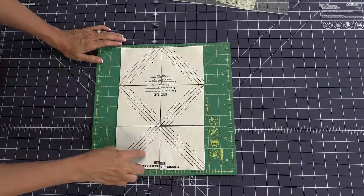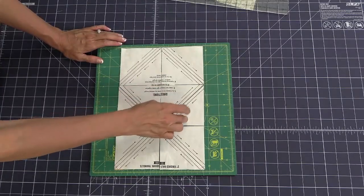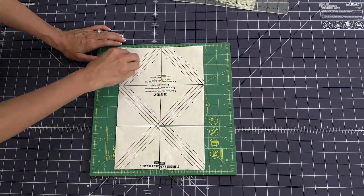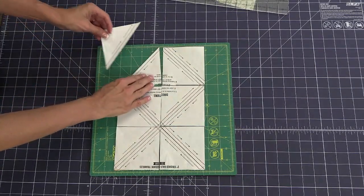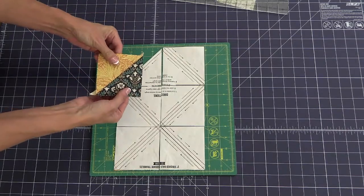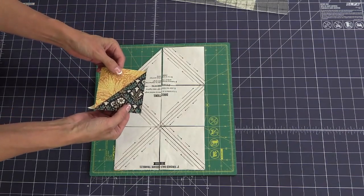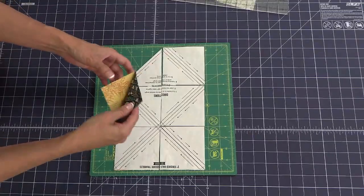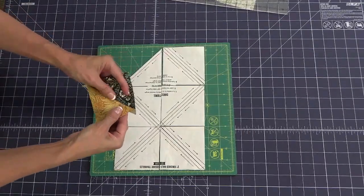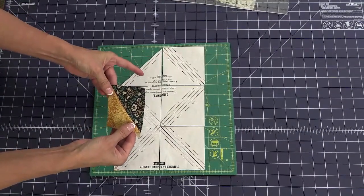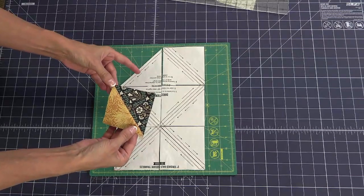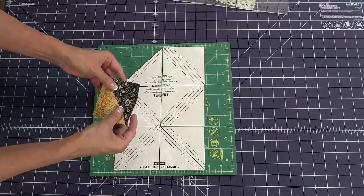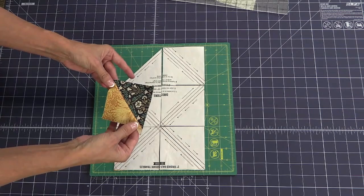We've got one, two, three, four, five, six, seven, eight, nine, ten, eleven, twelve half square triangles, which is pretty amazing. So, and they should be to size. They're very accurate. I've tested them each way and they're all accurate.